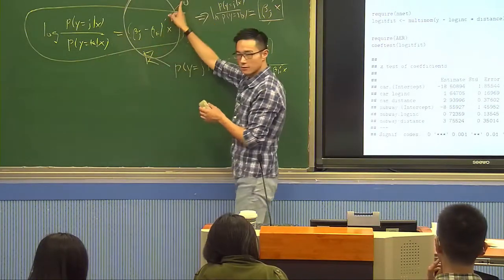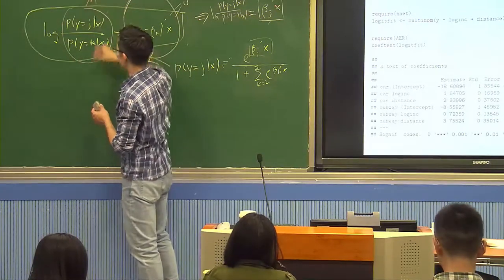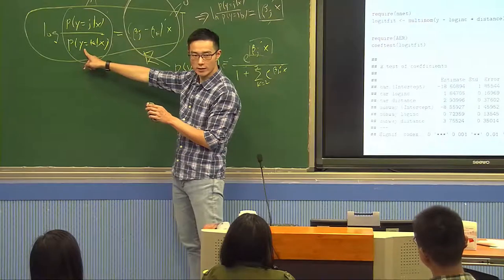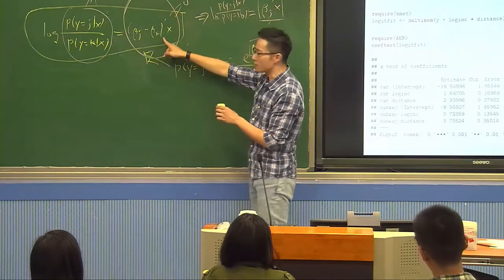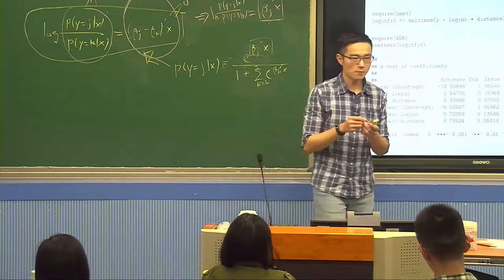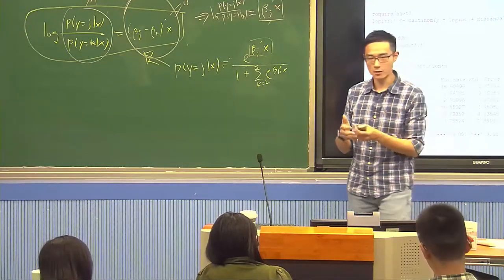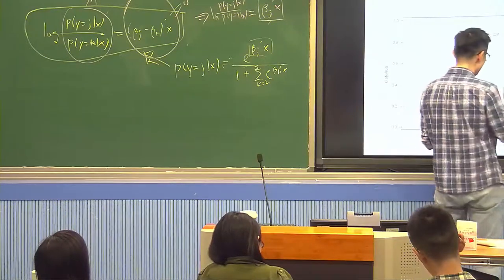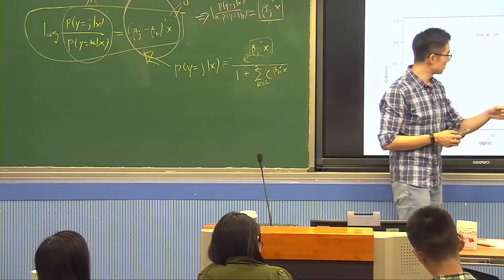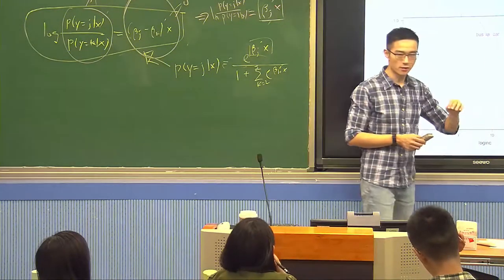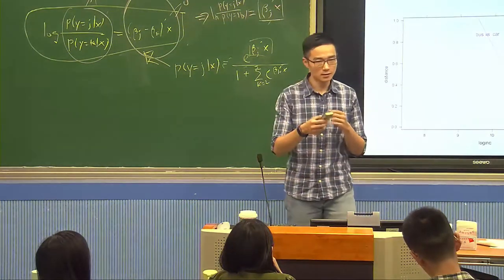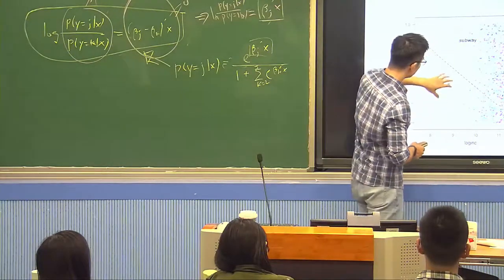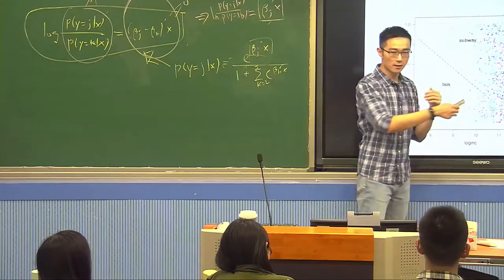Beta x indicates the relative probability of choosing j versus the reference level. This is the decision boundary that separates class j from class k. When the log-odds equals 0, the probabilities are equal — that's the boundary. If it's above 0, the probability of y equal to j is higher; if below 0, the probability of y equal to k is higher. The decision boundary is linear in logistic regression, whether binary or multi-class. For transportation, we have three lines separating three different classes: subway vs. car, bus vs. car, bus vs. subway.